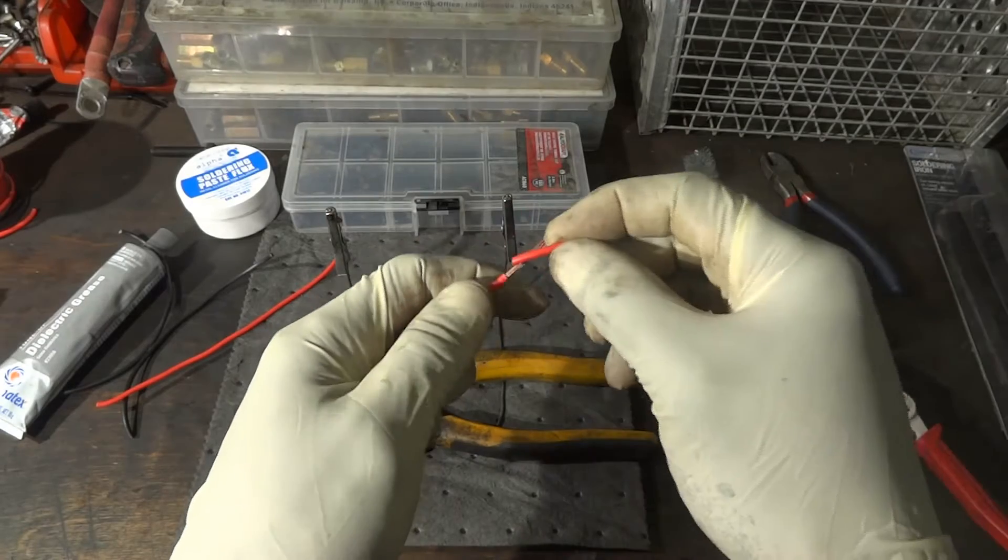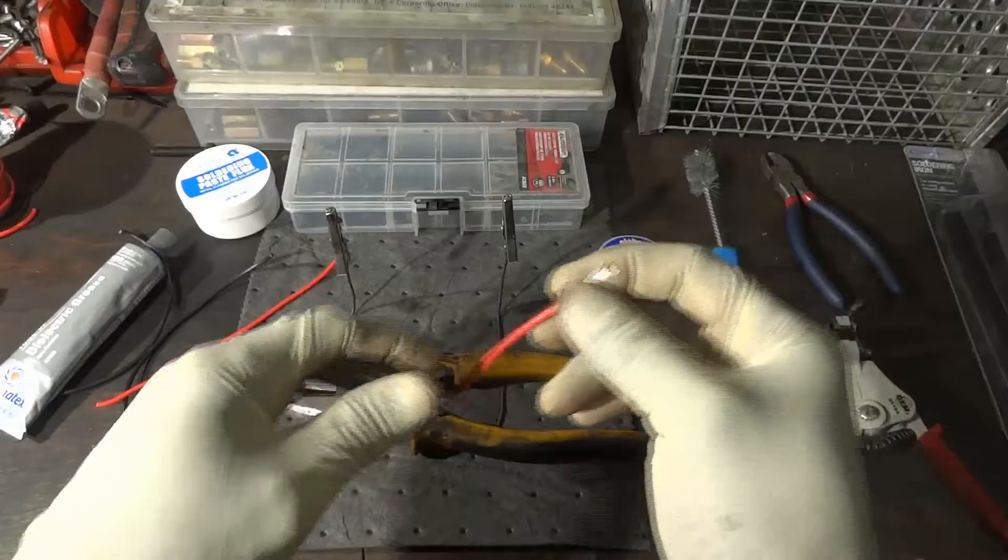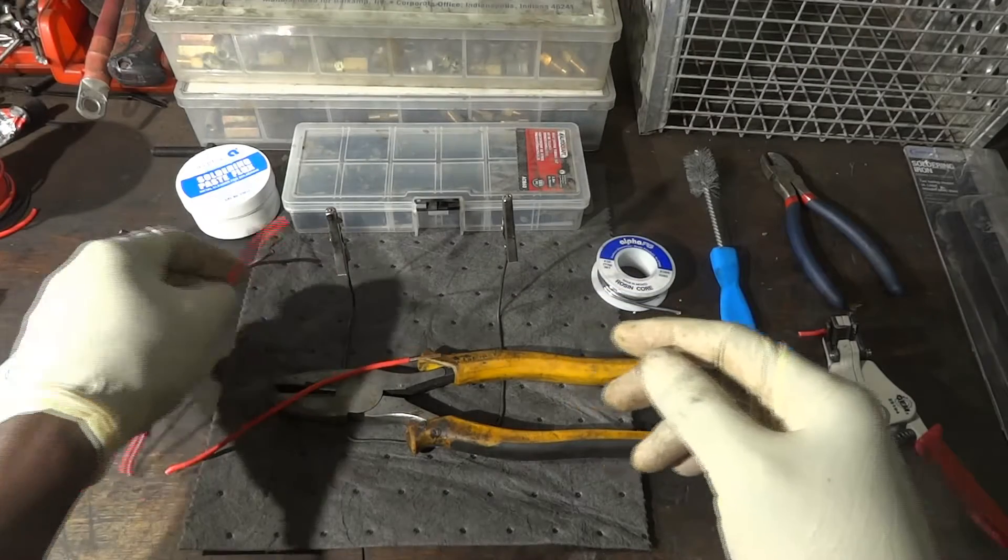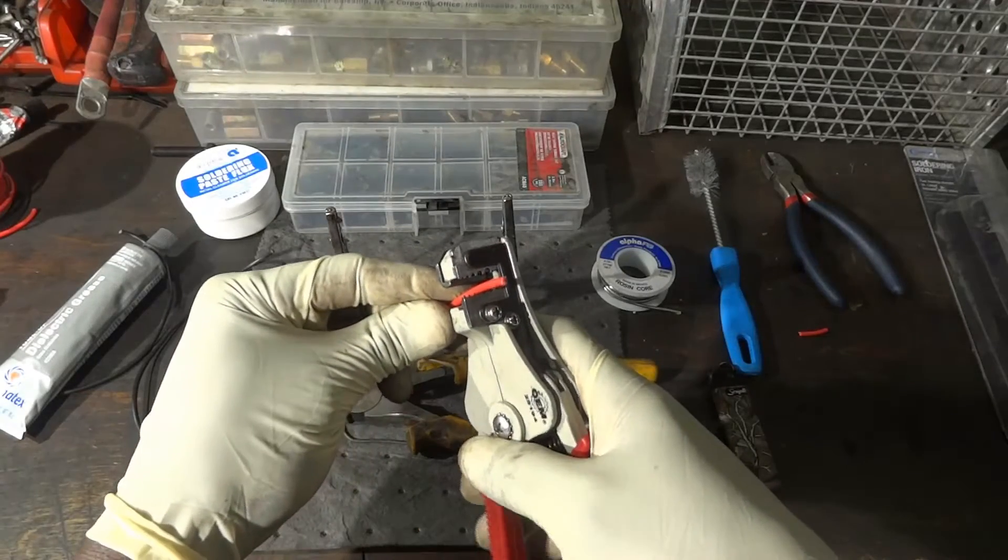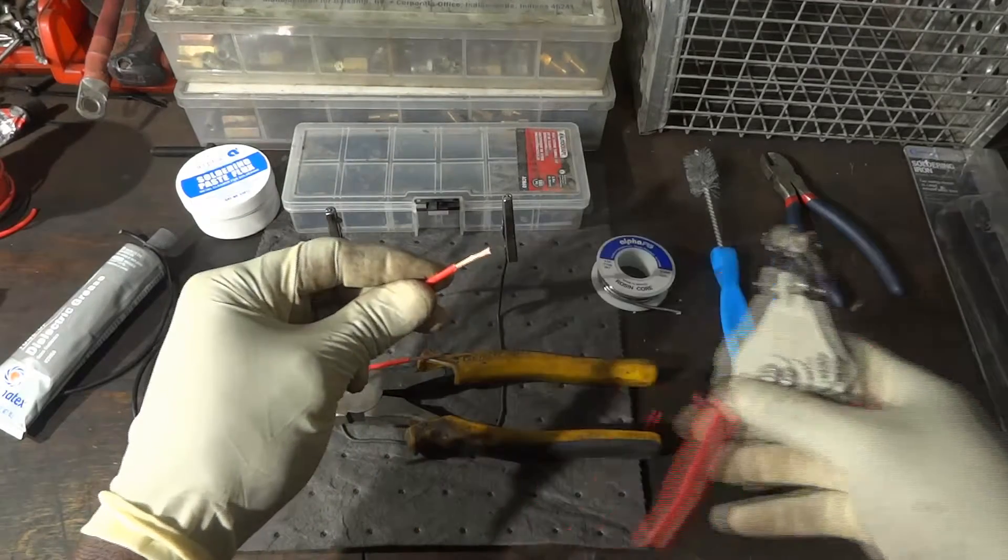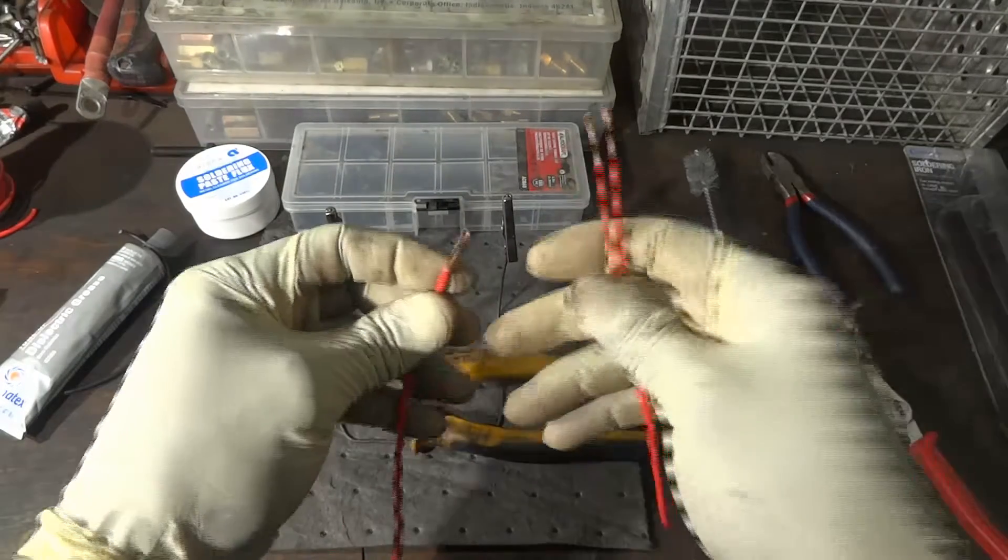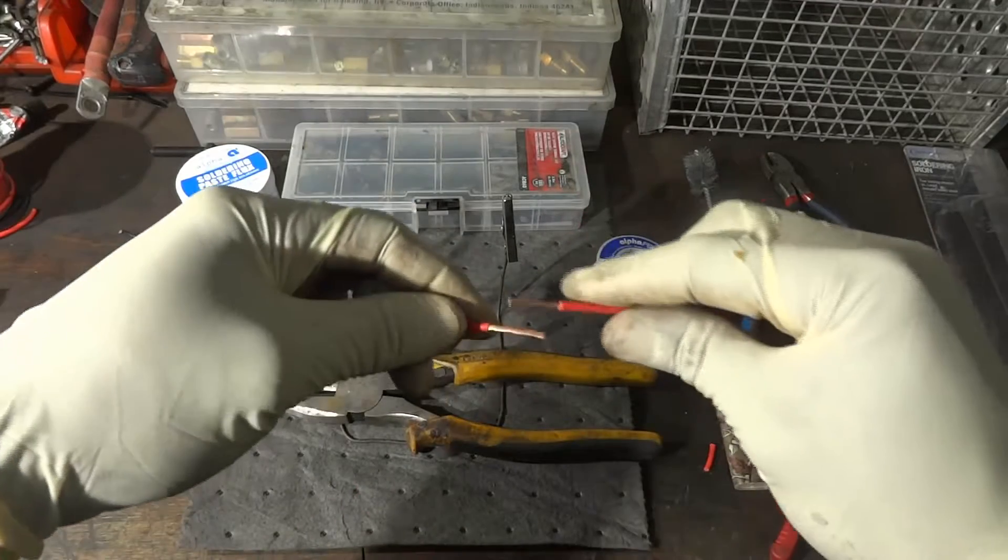Just make sure you're only stripping out the insulation. So now we got one end of the wire stripped out. We're going to do the same thing on the other wire. So we got one end on each wire stripped out, so now we can join our wires together.